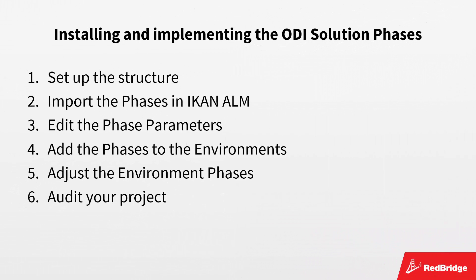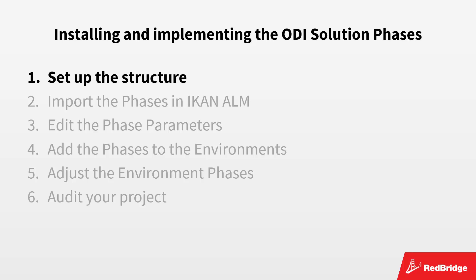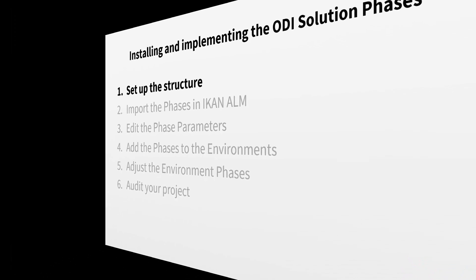The installation and implementation of the ODI solution phases is done in a few simple steps. First, you import the phases in the ICANN ALM interface and specify the global parameter values in the global administration section. Next, you add the phases to the different environments and, if required, you adjust the environment parameters. Let's start with the installation of the phases.